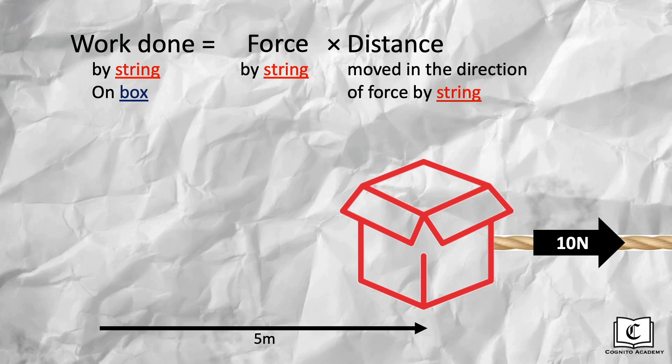Yes, this is a simpler case, like what we learnt just now. Since work done is by the string, the force we will use is the force by the string, which is the 10N. The distance we use is the distance in the same direction of this force, which will be the 5 meters. All this is the same as the previous example, just with simpler scenarios, as there is only one force and one distance to choose from here.